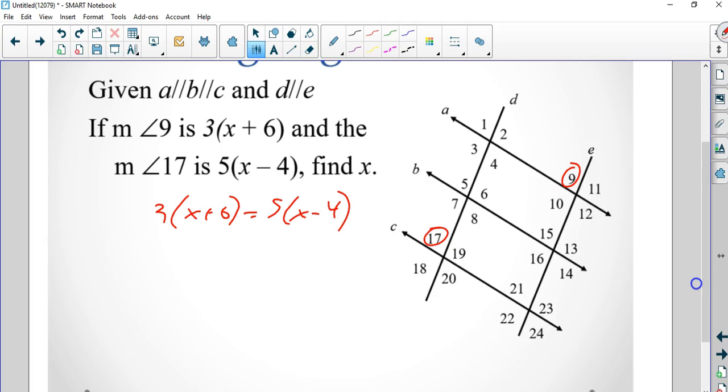The first step is to distribute. 3x plus 18, 5x minus 20. Now I'm going to move my x's over here. I'm going to add 20 over here. So I get 38 equals 2x. If I divide it by 2, I get x equals 19.